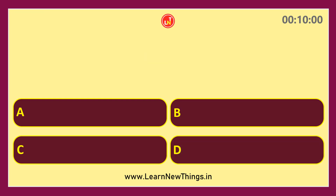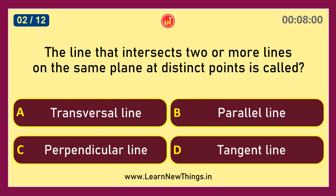The line that intersects two or more lines on the same plane at distinct points is called a Transversal Line.